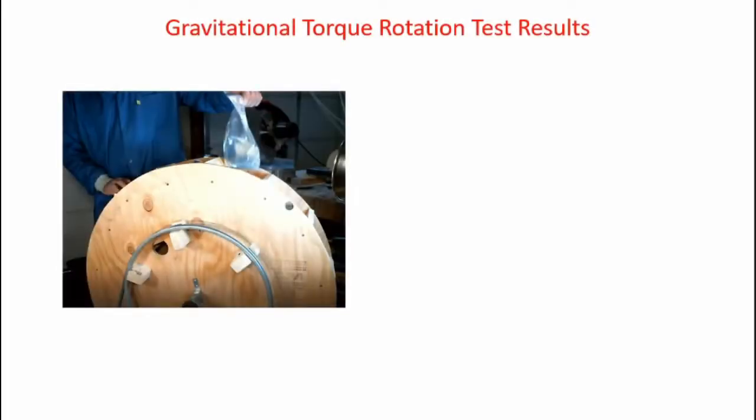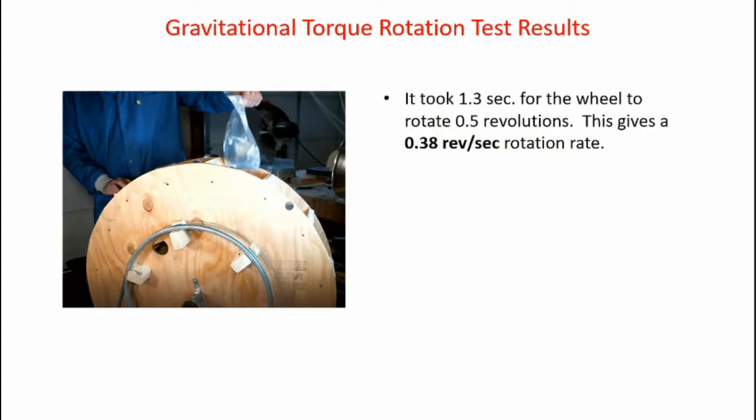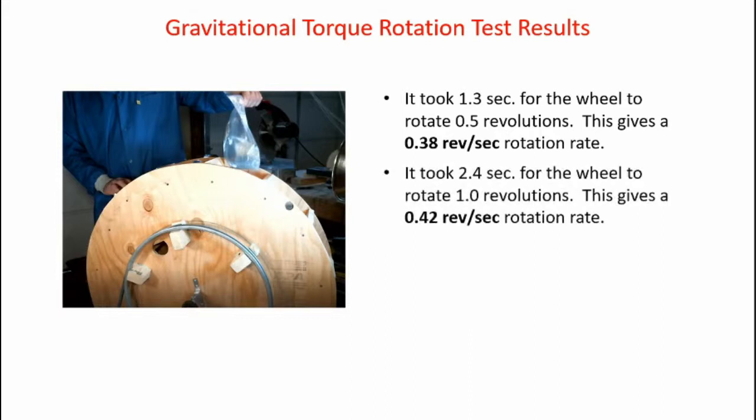Here are the results of the gravitational torque rotation tests. This data is obtained by looking at the wheel moving one half revolution and one revolution and counting the number of video frames required. It took 1.3 seconds for the wheel to rotate one half revolution, giving a rotational rate of 0.38 revolutions per second. It took 2.4 seconds for one revolution, giving 0.42 revolutions per second.